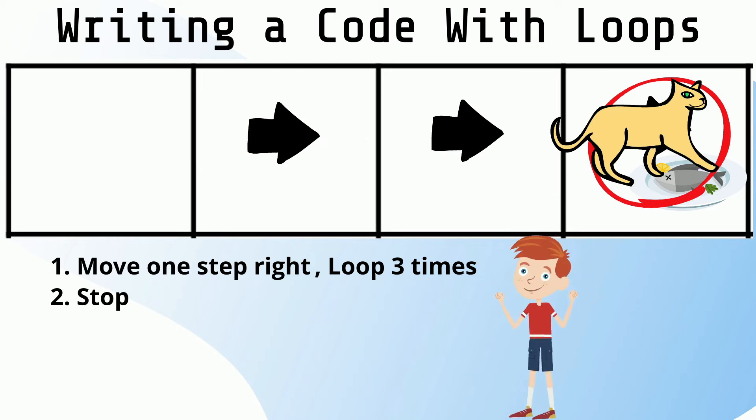All right! I was able to use code to write an algorithm. This algorithm had a loop that told the computer to make the cat move three steps to the right to get her cat food.